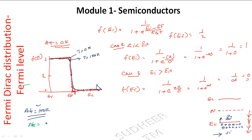At T equal to 200 Kelvin, we can expect more electrons above the Fermi level, with the probability distribution corresponding to the Fermi-Dirac function at that temperature.